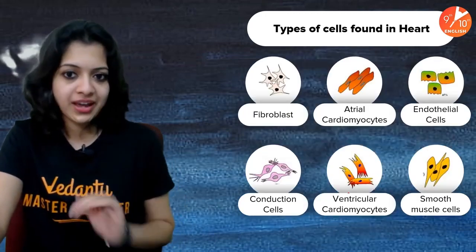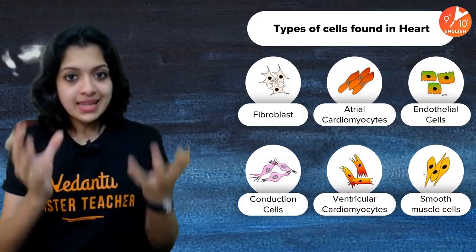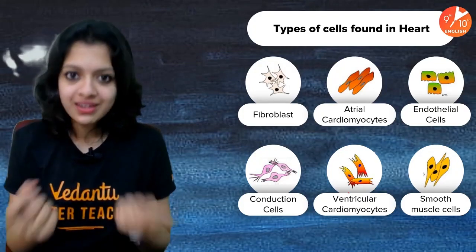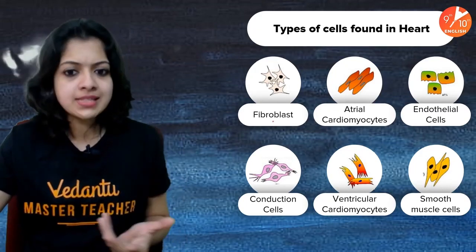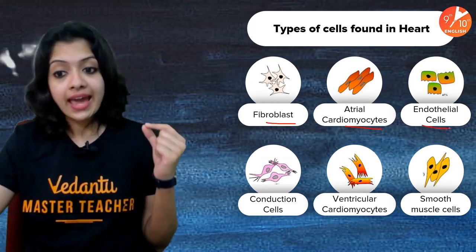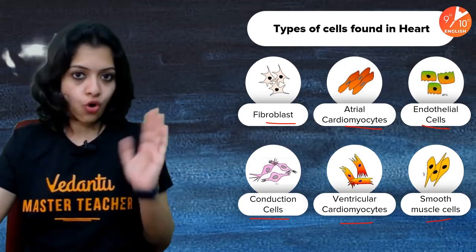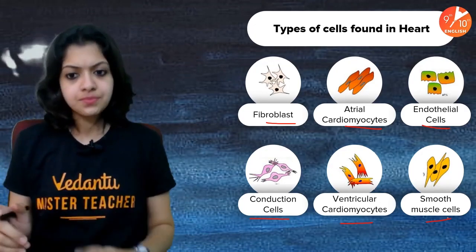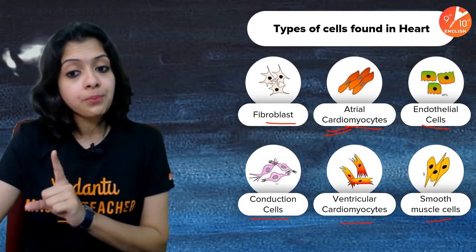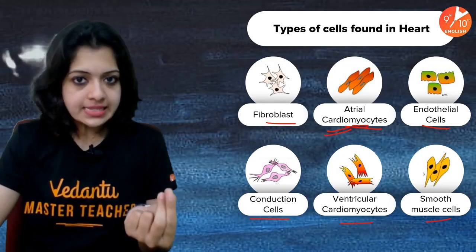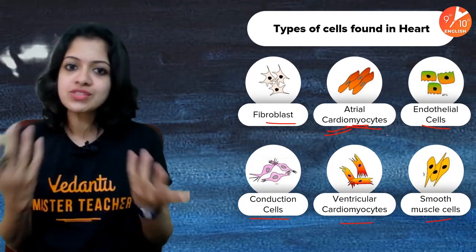The heart is not made of one single type of cell — it's a proper organ made of many different tissues. The major cell types include fibroblasts, atrial cardiomyocytes, endothelial cells, conduction cells, ventricular cardiomyocytes, and smooth muscle cells. Wherever you hear the prefix 'cardio' it relates to the heart, 'myo' relates to muscles, and 'cyte' means cell.